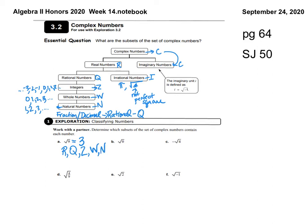For letter B, the square root of 0 is 0. Is 0 a real number? Yes. Is it rational? Yes. Is 0 an integer? Yes — it's in the list of integers (Z). Is 0 a whole number? Yes (W). Is 0 a natural number? No, it is not. So the letters for letter B are R, Q, Z, and W.